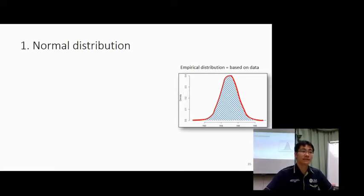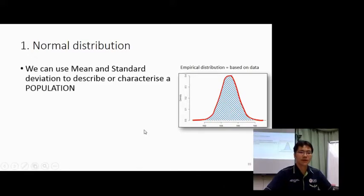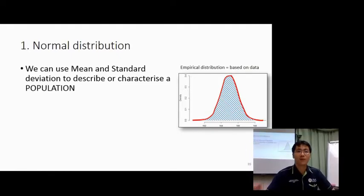Normal distribution is an empirical distribution — it's based on your data, not a theoretical distribution. If you assemble enough data, say 1,000 or 10,000 data points, and plot your graph, you can get a very nice curve. You learned how to use mean and standard deviation to describe or characterize a population. In this case, the population is the body height of students, and if you measure body weight, you'd get another distribution curve.